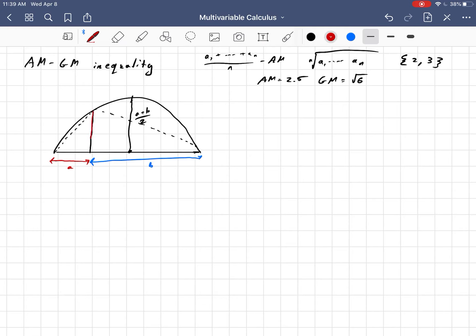Now, this length here is the geometric mean between A and B. In other words, this length here is the square root of AB.